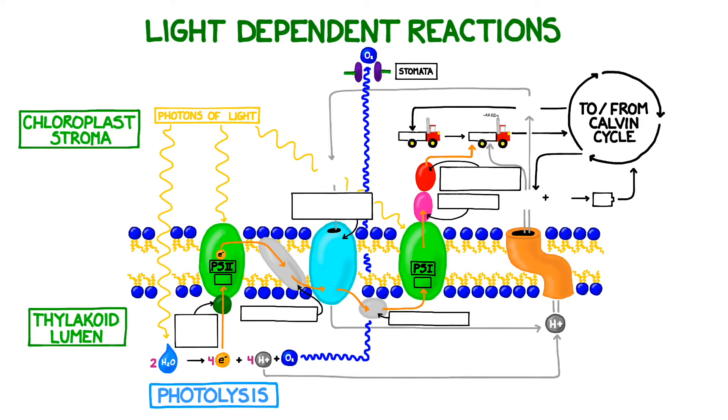Photosystem 2 contains a pigment called p680, which absorbs light of 680 nanometers. Photosystem 1 contains a different pigment called p700, which absorbs light of 700 nanometers.